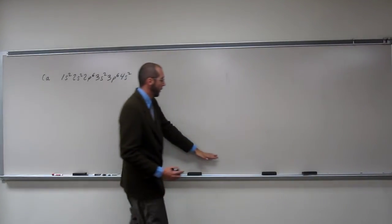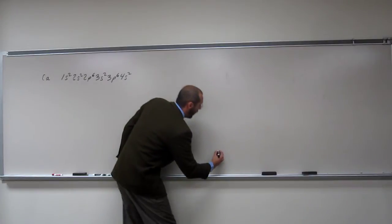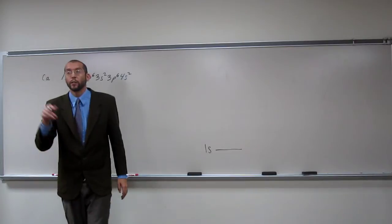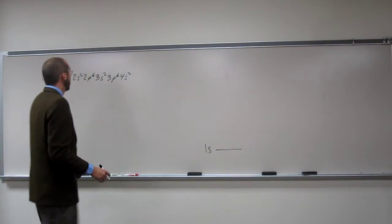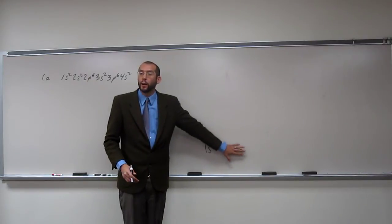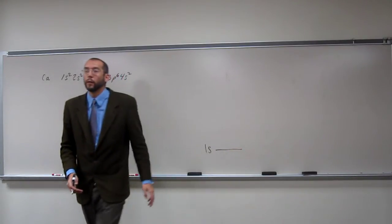So what's the lowest energy orbital? 1s. So remember when I say 2, then I start referring to the electron, so don't say that. So what's the next, and how many orbitals are in the 1s? I already gave it away, but how many are there? 1, right?